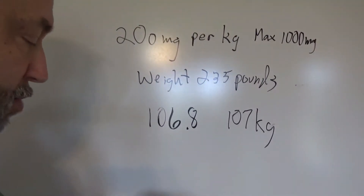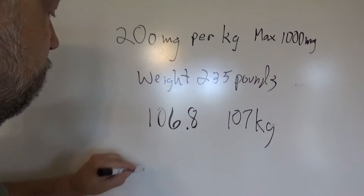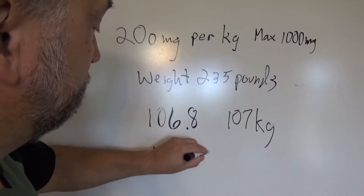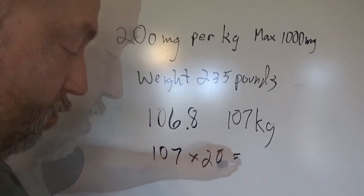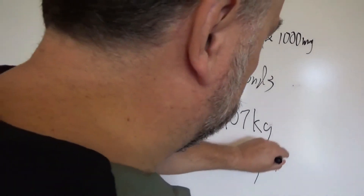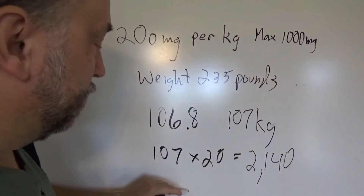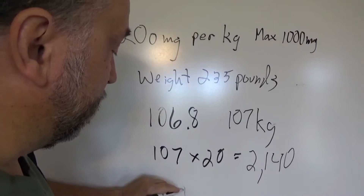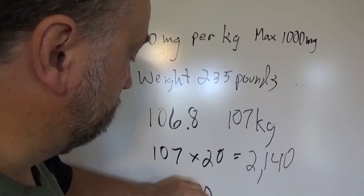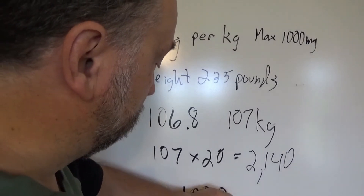So we've got 107 kilograms. We're supposed to give 20 milligrams per kilogram, so you take 107 times 20, which equals 2,140. We have a maximum of 1000, so we know we're going to be way over that maximum — so the max is what we're going to give.